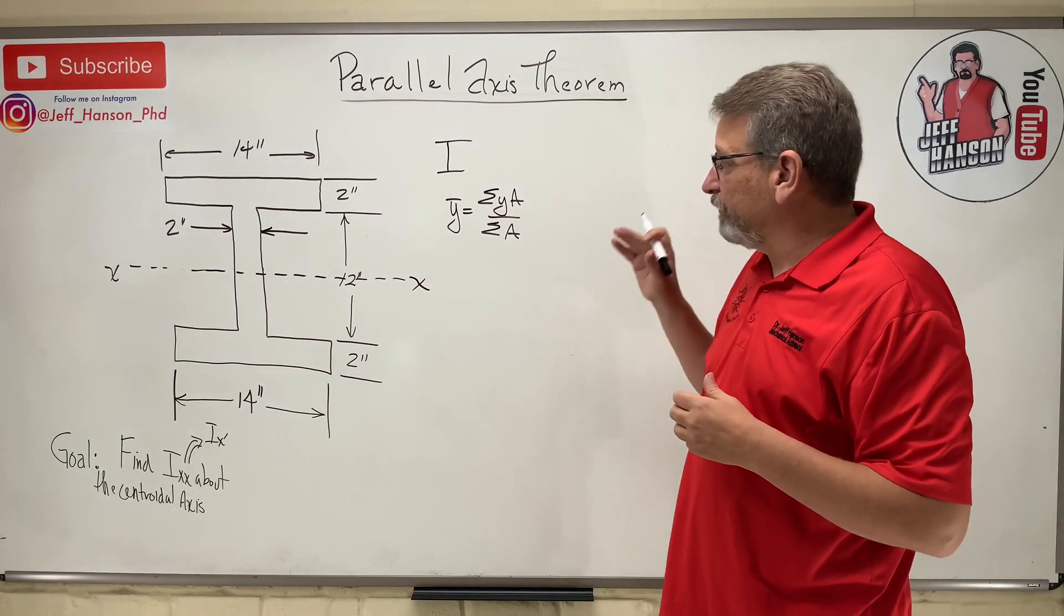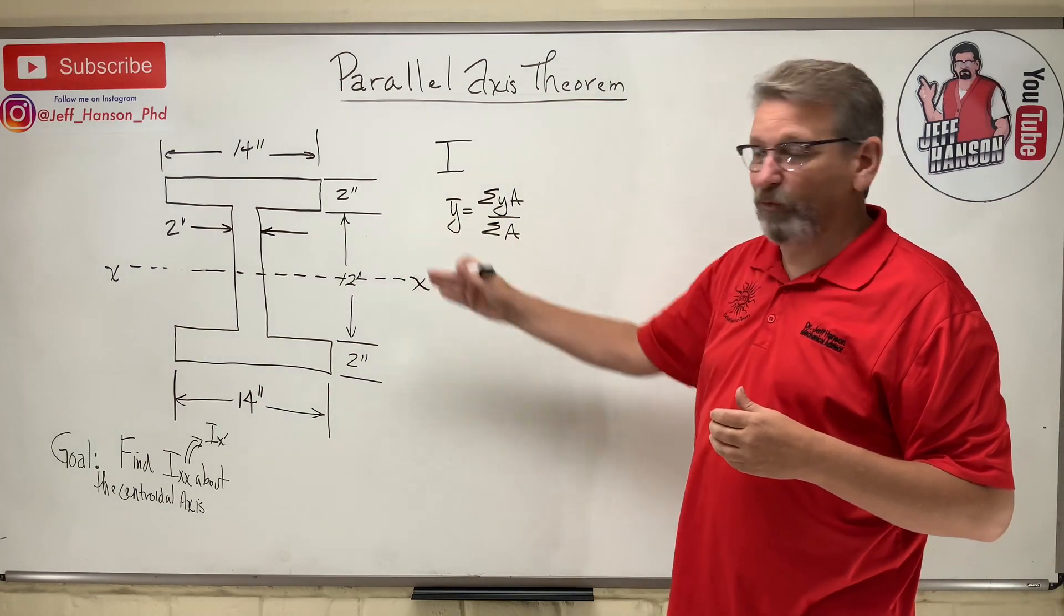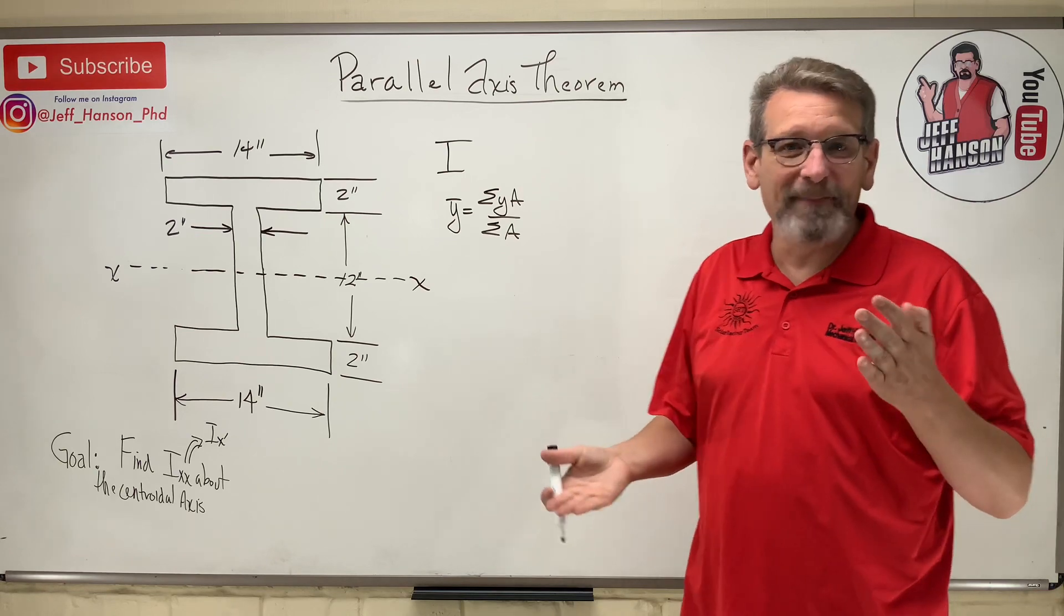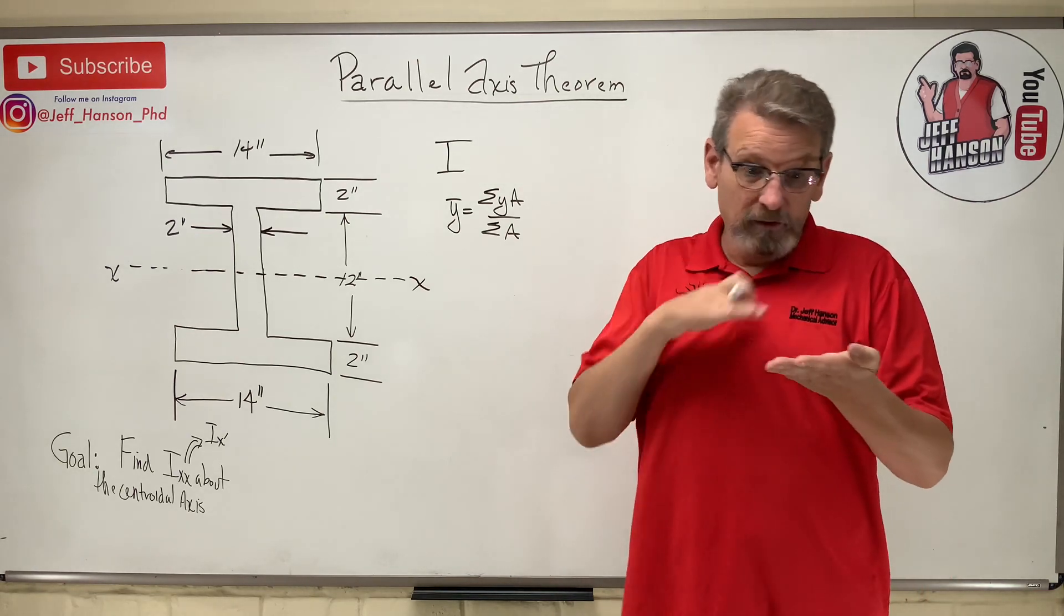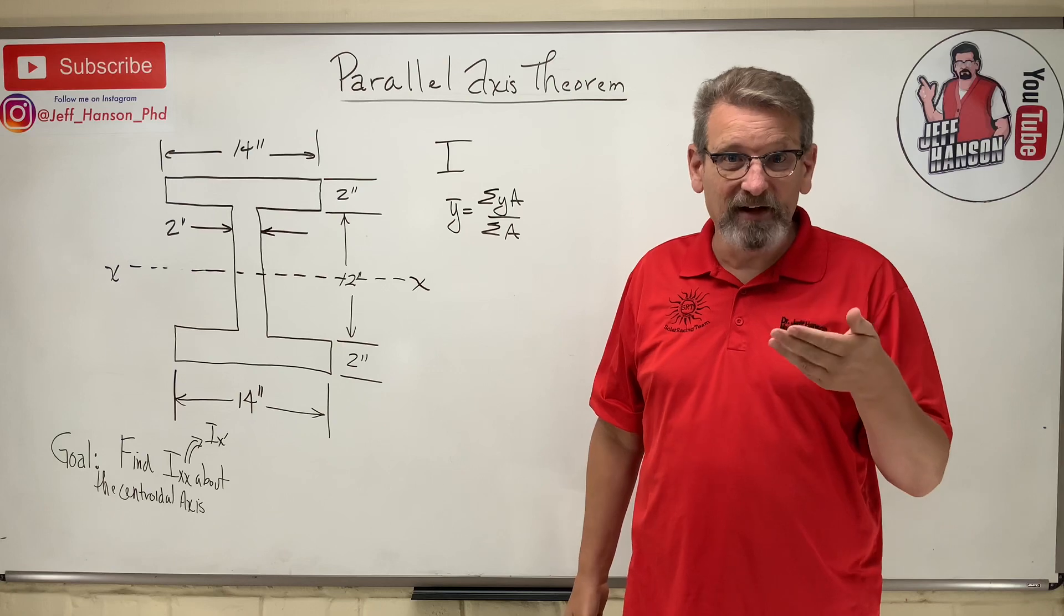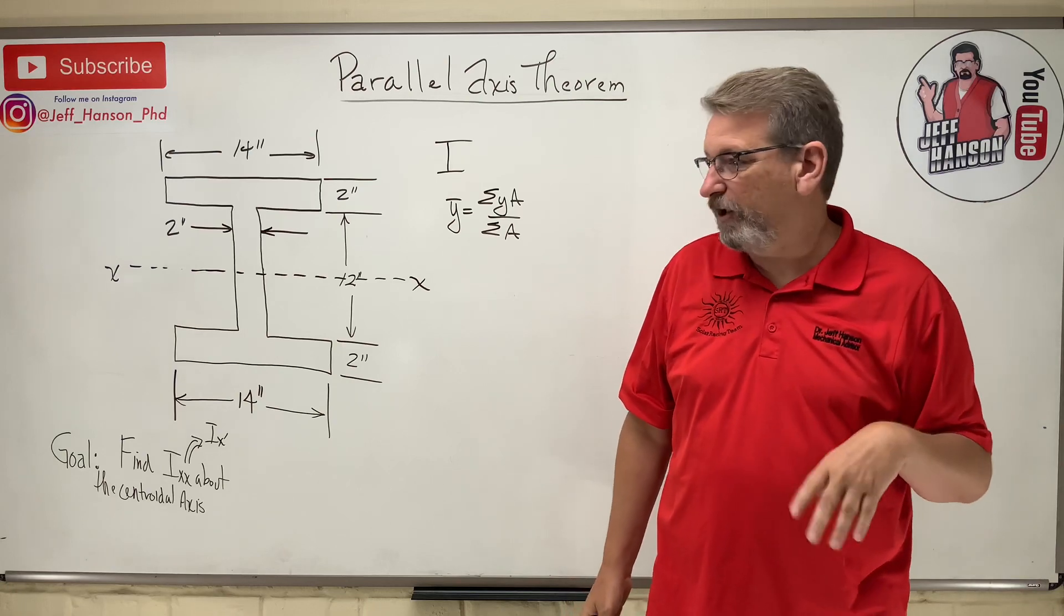So let's say we're going to have to do that. Now that looks like rectangles, doesn't it? So let's look in the back of our book. Flip over to the back of your book. Look in the centroid chart, and then it'll tell you those equations. I'll show you.